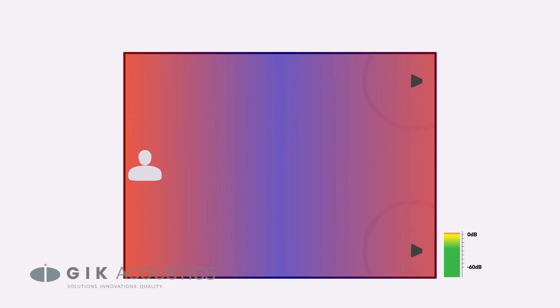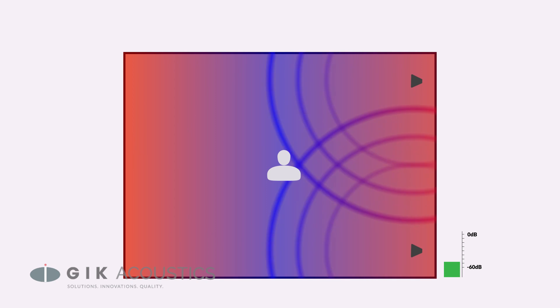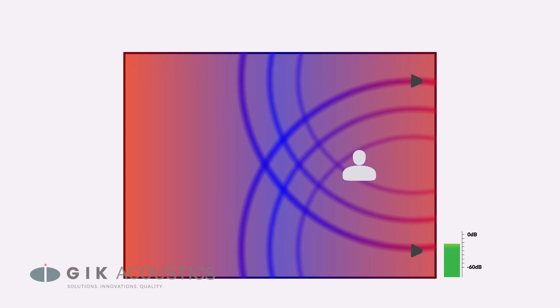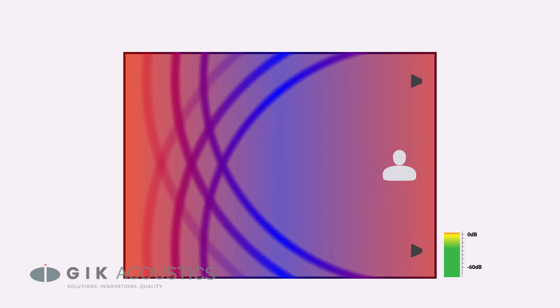You would notice the tone would be very strong on the back wall. As you move towards the center, it would get softer until it's almost gone completely. As you move towards the front of the room, the tone would come back as strong as it was before.